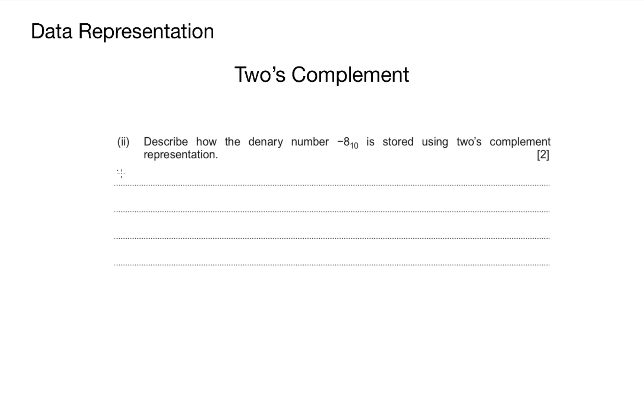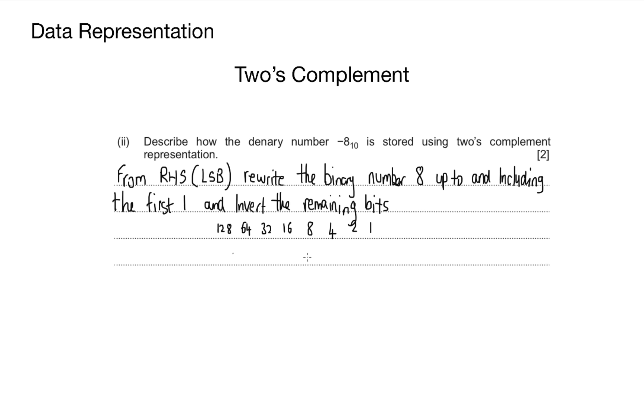My model answer is: from the right-hand side, or the least significant bit, rewrite the binary number 8 up to and including the first 1, and invert the rest of the bits. Always use an example. In this example, I've shown +8 in normal binary, then simply went up to and including the first 1 and inverted the rest of the bits. That should get you the marks.